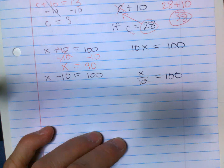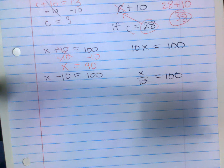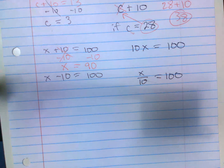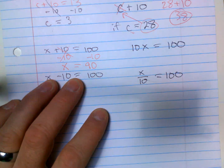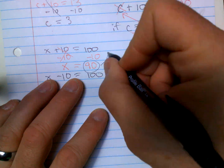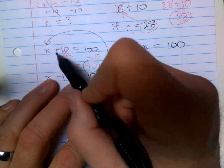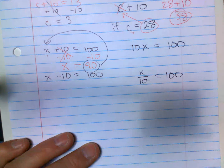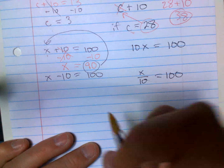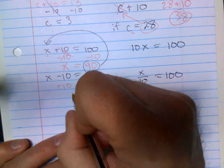If you think it sounds weird and you're not sure, you could substitute this 90 back in for X over here. Does 90 plus 10 equal 100? Yes. Let's do the next one. What's the opposite of minus 10? I'm going to plus 10. If you do one side, you're going to do the other. Therefore X has to equal 110.